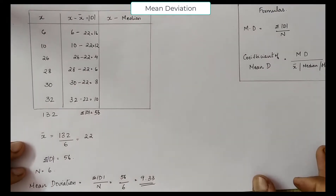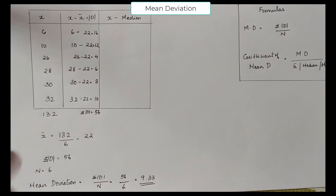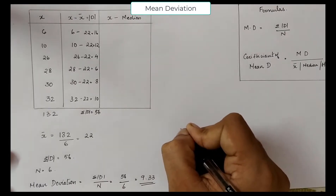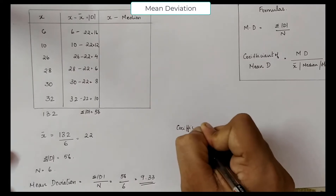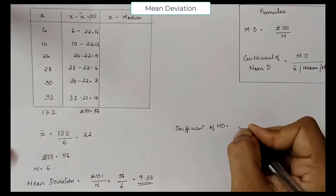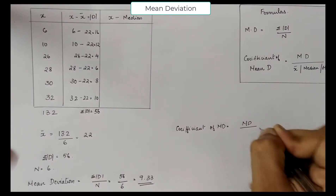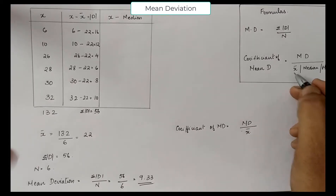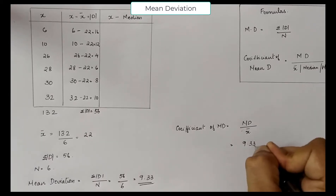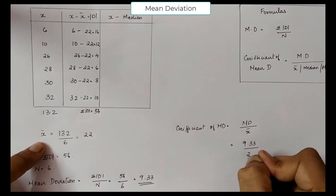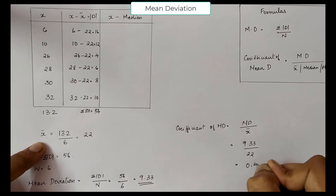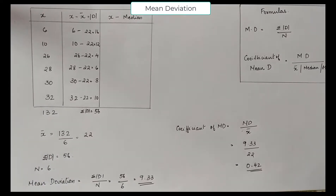Now we are supposed to find the coefficient of mean deviation. The coefficient of mean deviation is equal to mean deviation divided by X̄. Since we are taking mean, it is X̄. Mean deviation is 9.33 divided by 22, so the coefficient of mean deviation is 0.42.